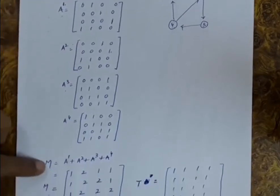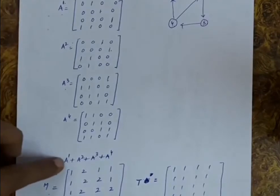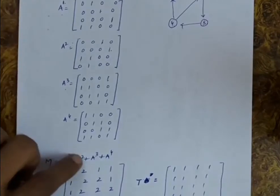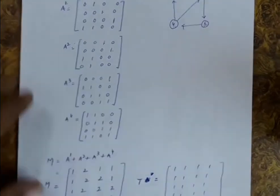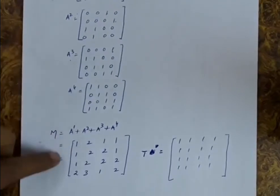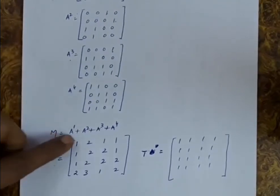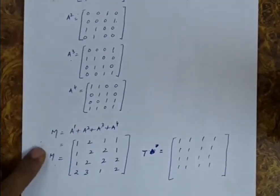So we have found all the paths of length 1, length 2, length 3, and length 4. Then we add all these matrices — A1, A2, A3, and A4 — to get the M matrix.